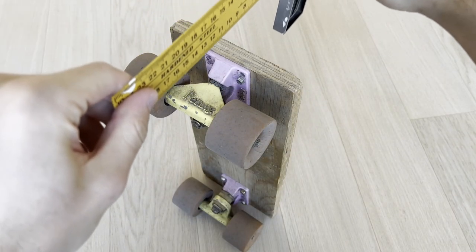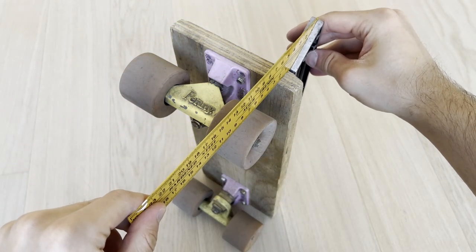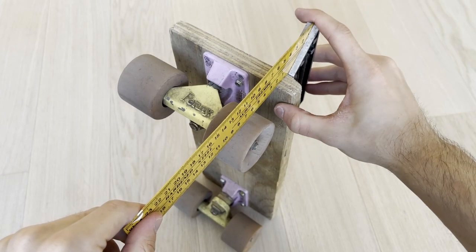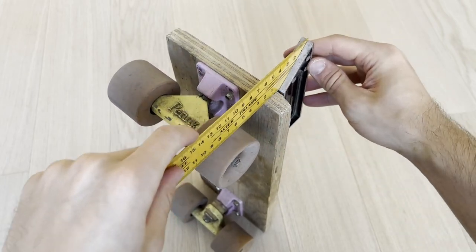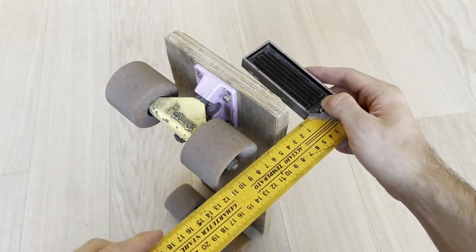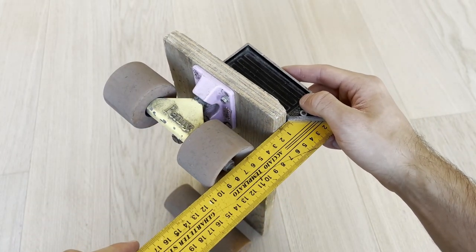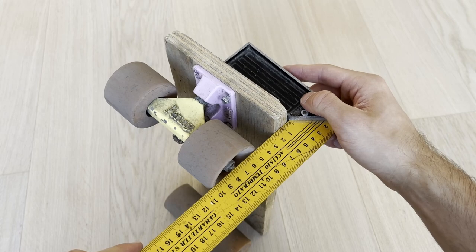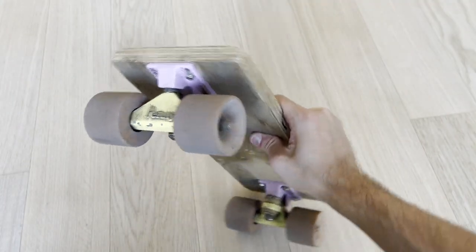There is more thought put into this than meets the eye though. The wheels are placed at a 90 degree angle from the edges of the board, both on the front and on the sides. This is what allows it to be able to stand upright and on the side.